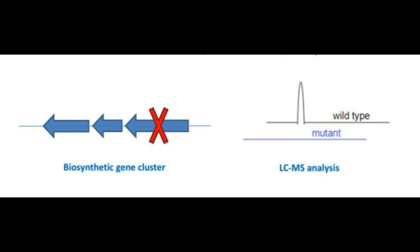We try to mutate the wild type using a gene knockout mechanism and then compare their metabolic profiles to see which particular segment of metabolites or peptides is giving certain intensity peaks in the mass spectrometry data. We can also try to express a pathway-specific activator and compare the metabolic profile of the wild type with the activator versus without the activator. This is similar to heterologously expressing a gene and then comparing the metabolic profile.